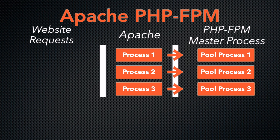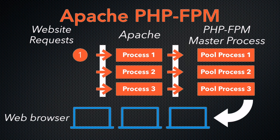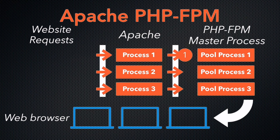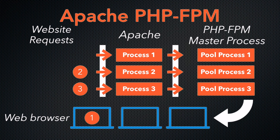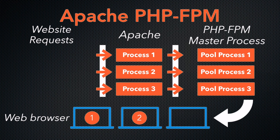Each domain has process pools whose sole job is to wait for a request to arrive. The PHP-FPM master process manages these pools. When a request comes, Apache talks to the Apache PHP-FPM master process. The master process receives Apache's request, then directs the request to the pool process that will process it. Since each domain will have its own pool, the processing requests happen super fast.